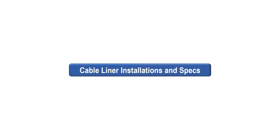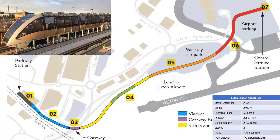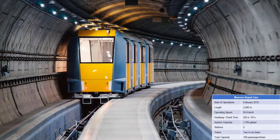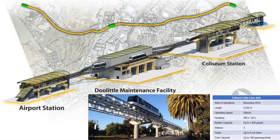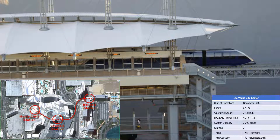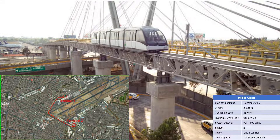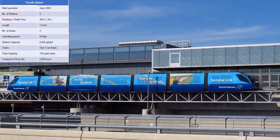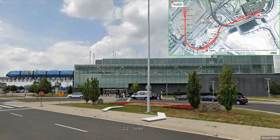These are more sample cable liner installations and specs. One cable liner, operational in 2022, will be the fastest cable liner at 50 kph with a higher capacity of 170 passengers per train set. A cable liner in Moscow International Airport goes through a tunnel. Another cable liner connects the airport to the Oakland-San Francisco subway line. There are also installations in Las Vegas, Mexico International Airport, and Toronto International Airport. The drive station contains the mechanisms to pull the train set and also serves as the facility to maintain the trains — unlike an LRT, there is no need for an off-site depot.